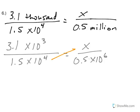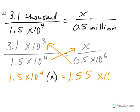When I cross multiply here, I get 1.5 times 10 to the 4th times x equals, when I go the other direction, 3.1 times 0.5, that's going to give me 1.55 times 10 to the 9th. I'm going to divide by the number in front of x, which is 1.5 times 10 to the 4th.